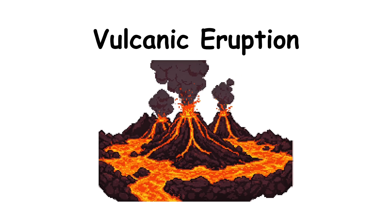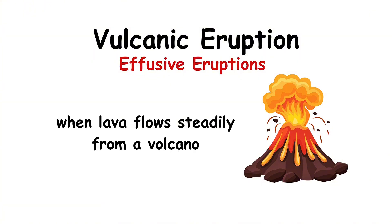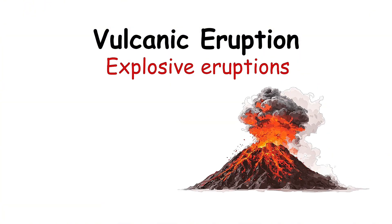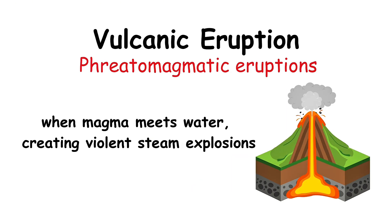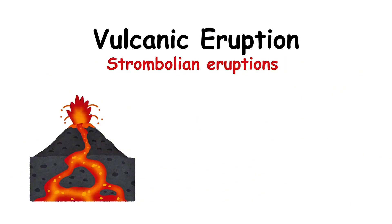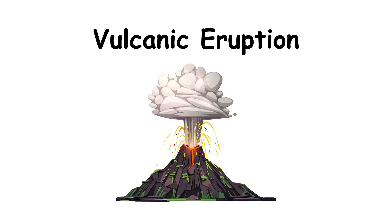Types of volcanic eruptions include effusive eruptions, when lava flows steadily from a volcano; explosive eruptions — powerful blasts of ash, gas, and rock; phreatomagmatic eruptions, when magma meets water, creating violent steam explosions; and Strombolian eruptions — smaller lava bursts that occur repeatedly. Volcanic eruptions can also trigger other disasters such as pyroclastic flows, lava floods, tsunamis, and even long-term climate change.